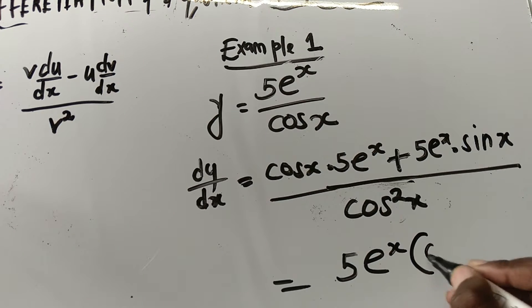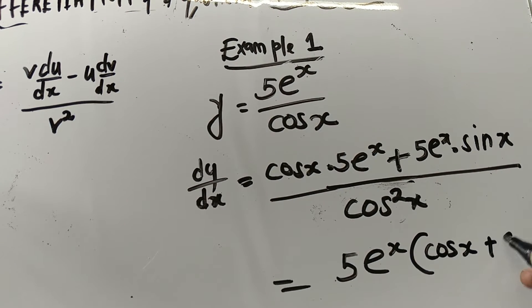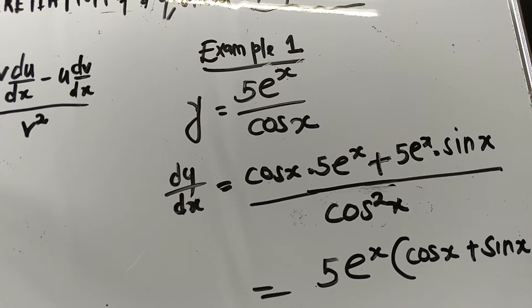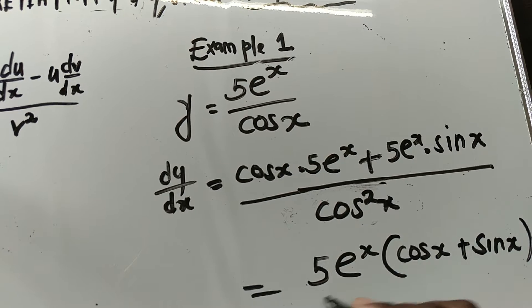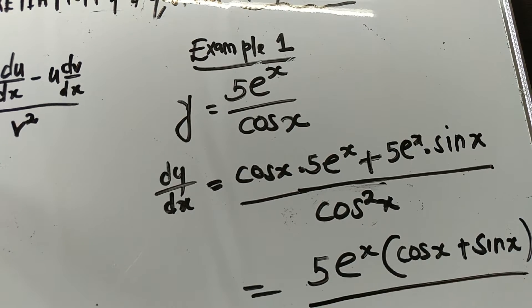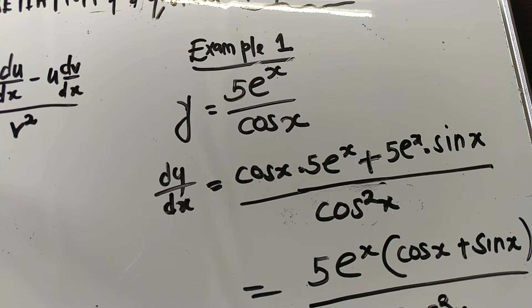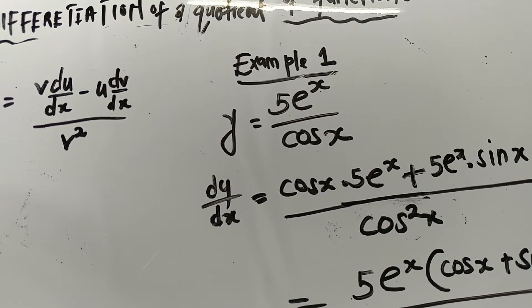Factoring out 5eˣ, we have cos(x) plus sin(x), all divided by cos squared x. So this is the solution to our problem.